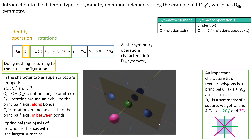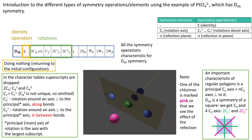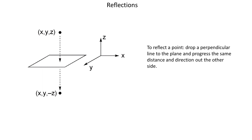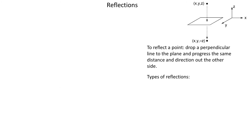Next let's tackle reflections. We have already seen an example of a reflection — the symmetry element is the plane and the operation is the action of reflecting. To reflect a point we need to drop a perpendicular line to the reflection plane and progress the same distance in the same direction out the other side. Please notice that the symbol sigma is used to indicate reflection, both the operation and the plane.